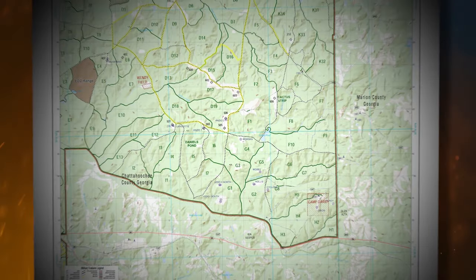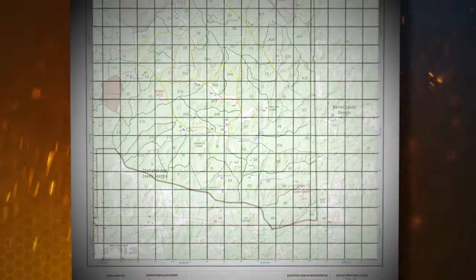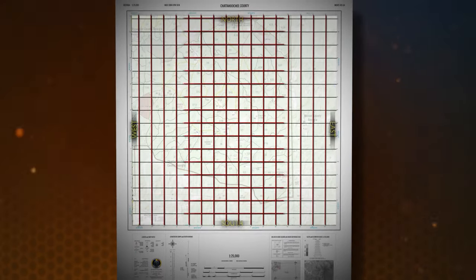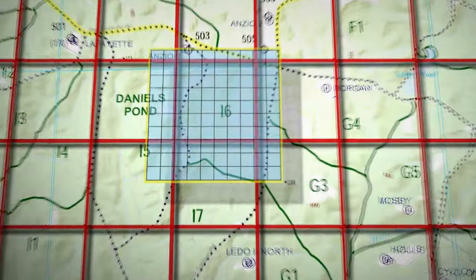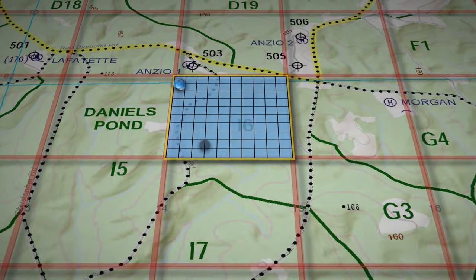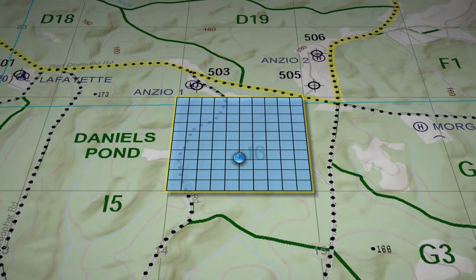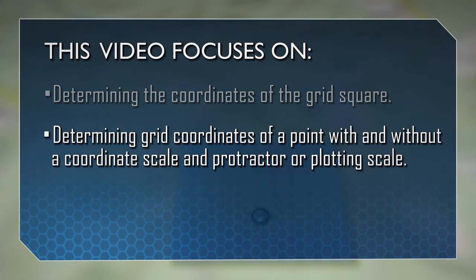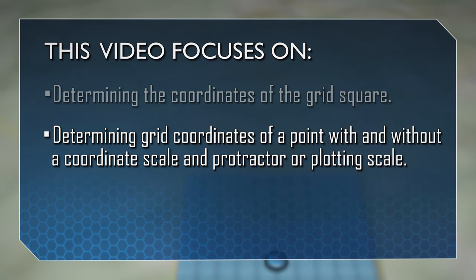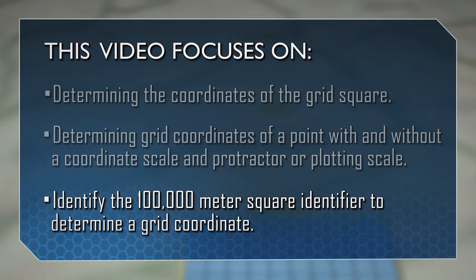The Military Grid System is a network of squares formed by the north-south and east-west grid lines printed on a map. The purpose of the grid system is to enable the soldier to quickly and accurately locate a point on a map. This video focuses on determining the coordinates of the grid square, determining grid coordinates of a point with and without a coordinate scale and protractor, or plotting scale, and identifying the 100,000-meter square identifier to determine a grid coordinate.